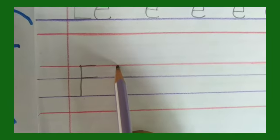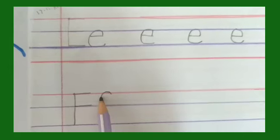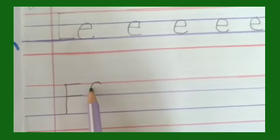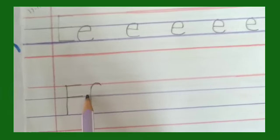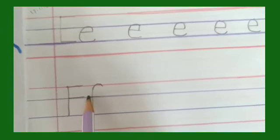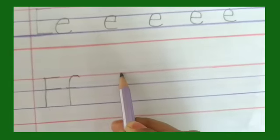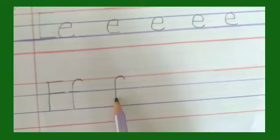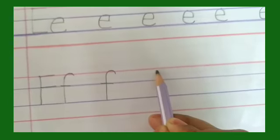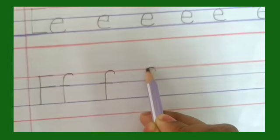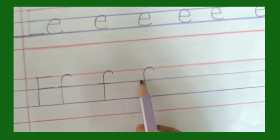We begin from the first line, that is line number one — the red line. Make a curve, come down to line number three, and then on line number two, that is the blue line, make a sleeping line — letter F. Make a curve, come down straight to line number three, that is the blue line.